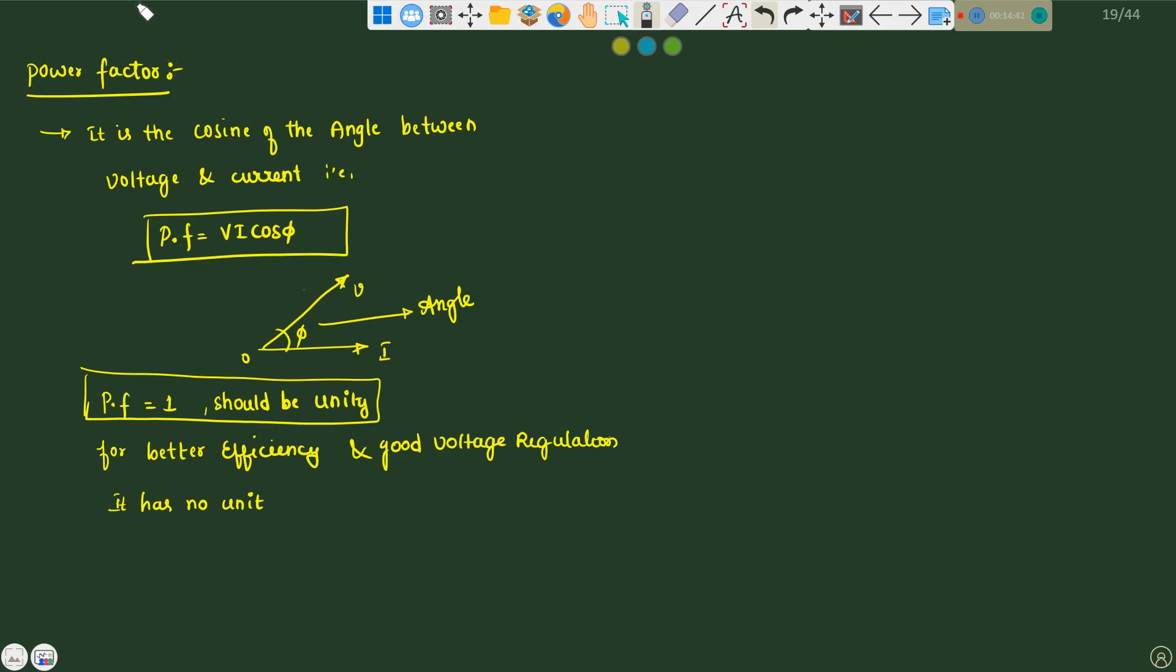If you talk about power factor, it is the cosine of the angle between voltage and current. Current as a reference axis. Power factor should be 1, you should maintain the power factor 1, it should be unity. Why? Because for better efficiency and good voltage regulation and it has no unit.